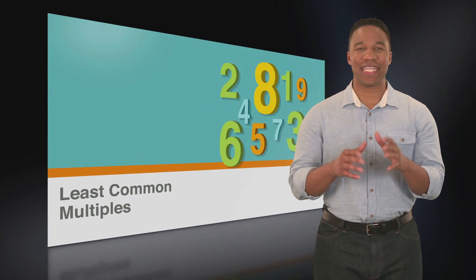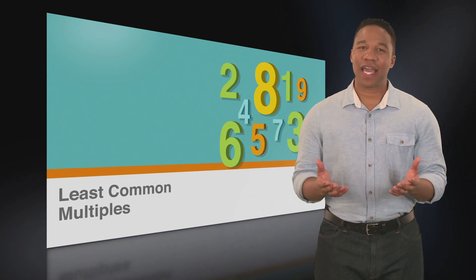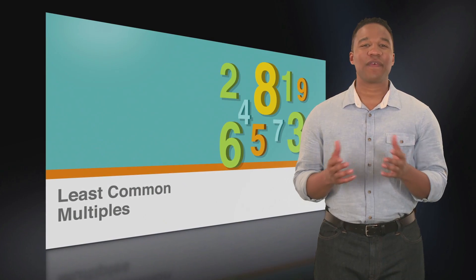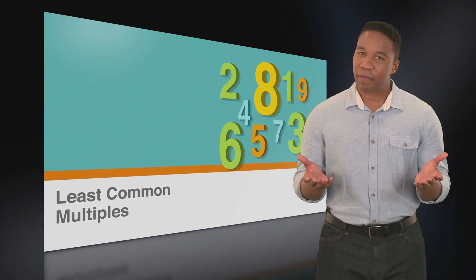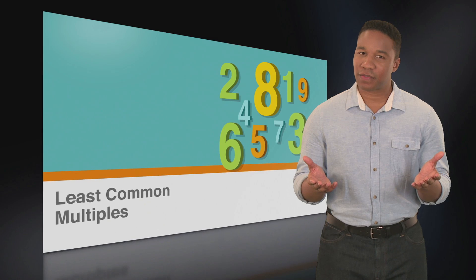Numbers and multiples go hand in hand. In fact, all numbers have endless sets of multiples. So what makes multiples special? The GRE will often test you on finding common multiples shared by several numbers. Keeping this in mind, let's do a refresher on multiples and a special kind of multiple that the GRE loves: the least common multiple for two or more numbers.